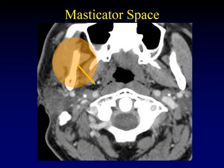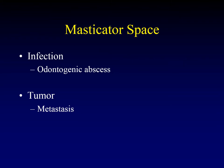Let's start with the masticator space. When a lesion arises in the masticator space, you expect it to displace the parapharyngeal fat posteriorly and a little bit medially. The most common lesions we encounter there are infections, particularly odontogenic abscesses, and tumors.